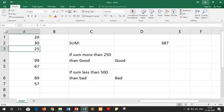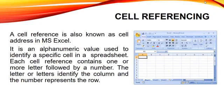Now let's move to our second concept: cell referencing. Whenever we are discussing about the MS Excel sheet, we have to work with the cells, rows and columns. In MS Excel, every cell has a unique address and that cell address is termed as cell reference. A cell reference is also termed as a cell address. This cell address is an alphanumeric value which is used to identify a specific cell in a spreadsheet.